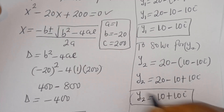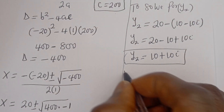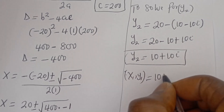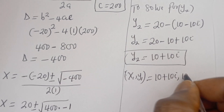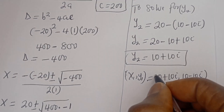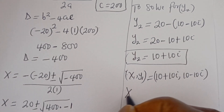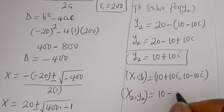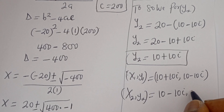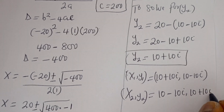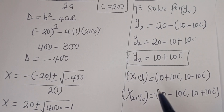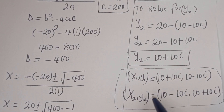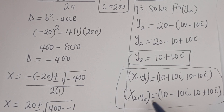Therefore our final answer is: X1, Y1 is equal to (10 plus 10i, 10 minus 10i), and X2, Y2 is equal to (10 minus 10i, 10 plus 10i). Note that X1 equals Y2, and Y1 equals X2.